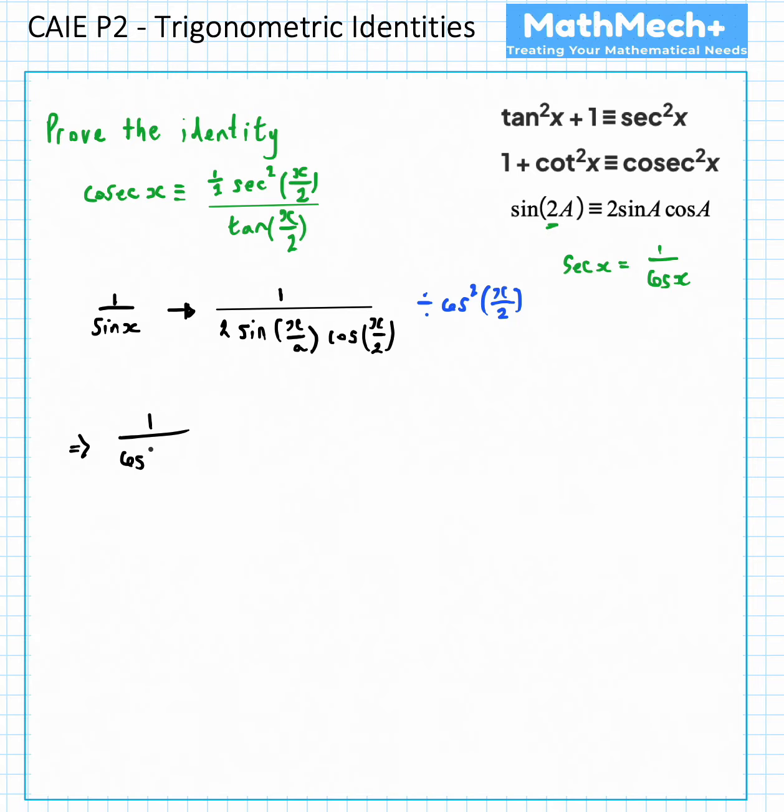So let's do all that in one go. One all over cosine squared x over two, that's our numerator, and we'll do the same with our denominator. So two sine x over two cosine x over two, divided by what we've already established, divided by cosine squared x over two.